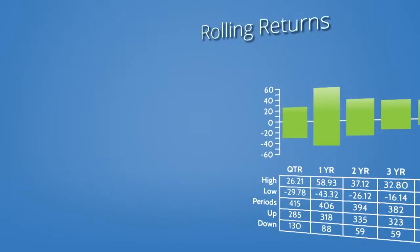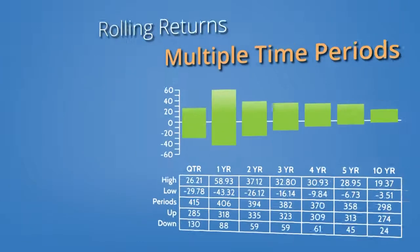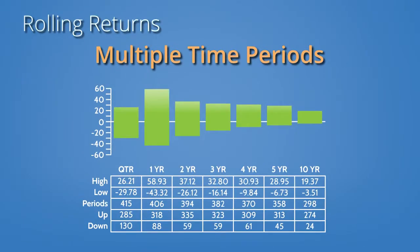Trailing period returns only tell you how an investment or index performed for very specific periods of time. Rolling period returns tell you how the fund performed over multiple trailing time periods. Why are rolling period returns so important? With them, you have a much better sense of the extent of volatility an investment involves.